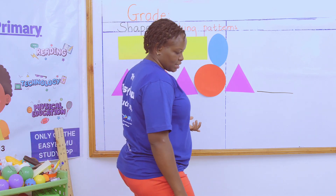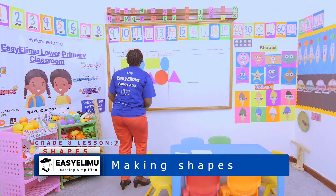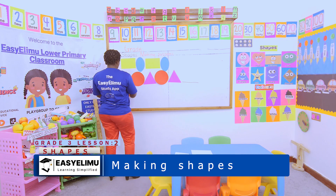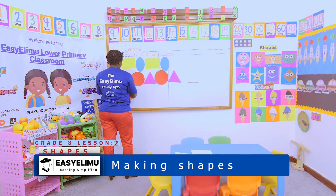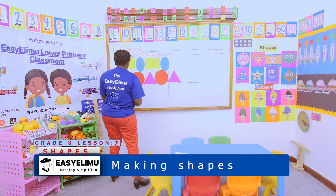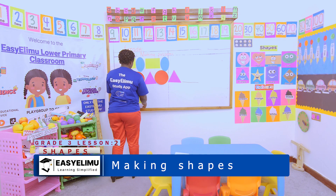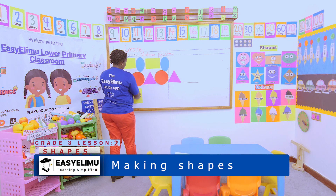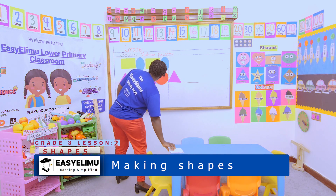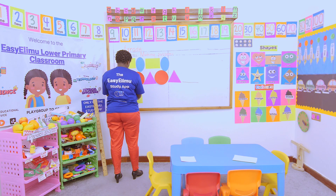I can still decide to make a pattern with a square, then a rectangle, then square again, square again, and square again.